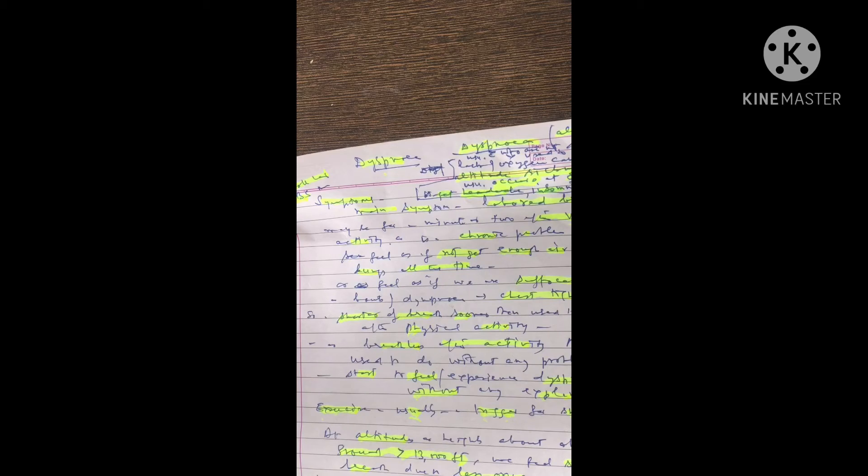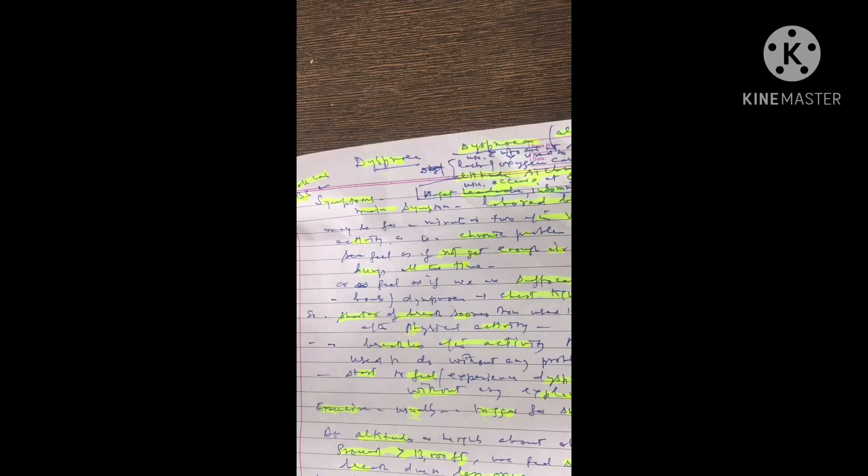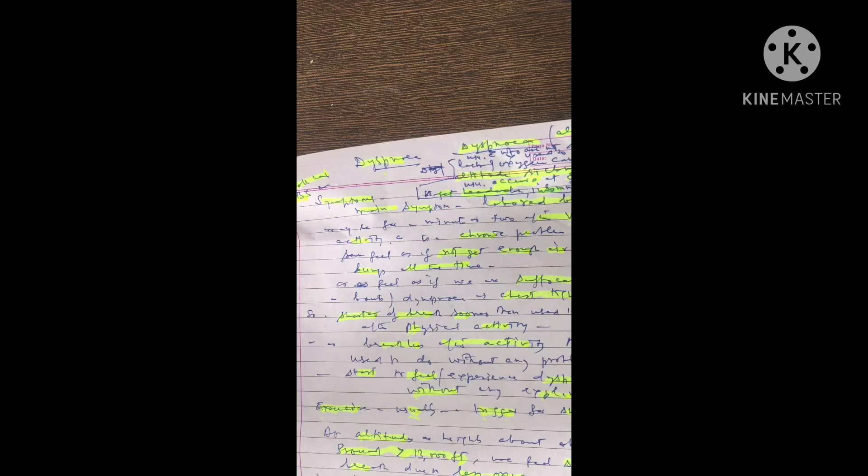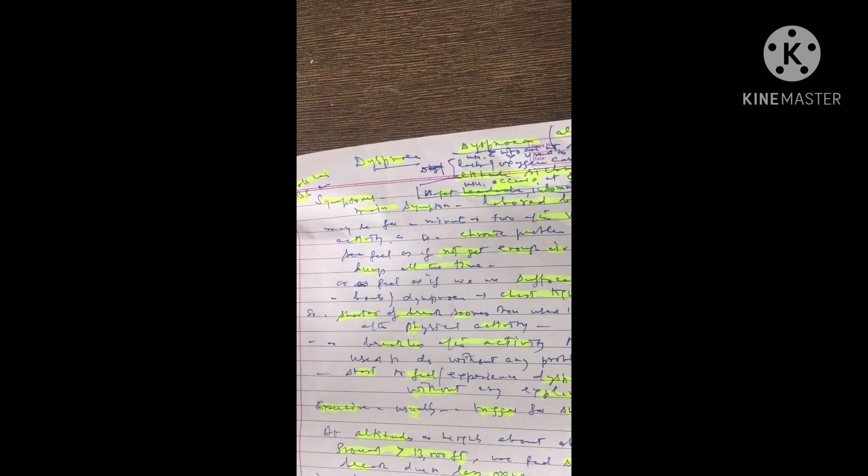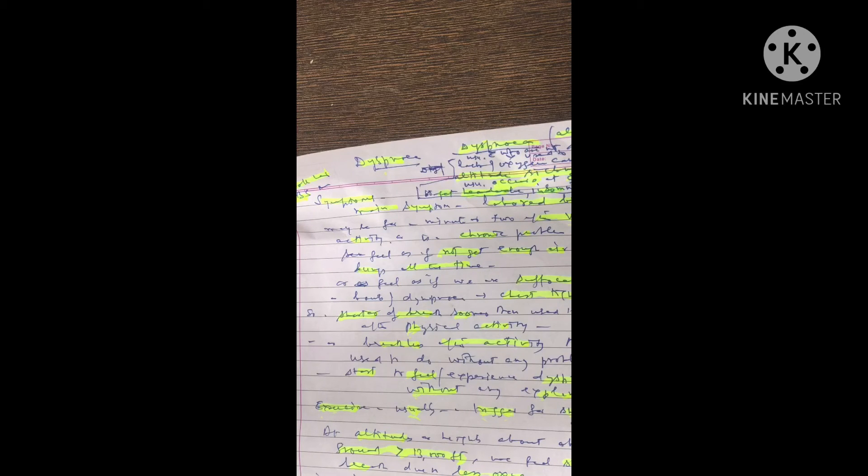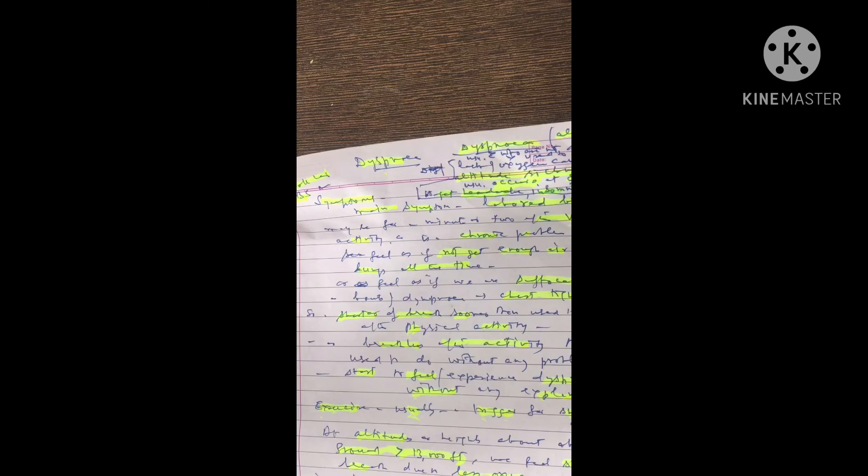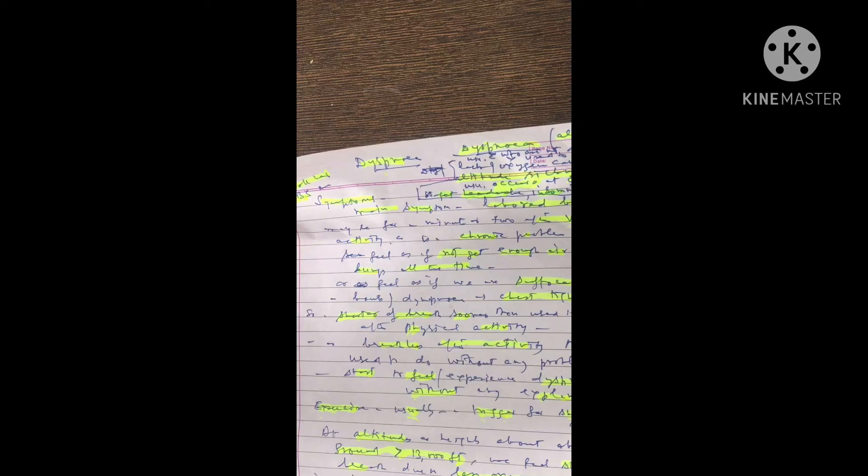Now I will discuss symptoms of dyspnea. The main symptom is labored breathing. It may be for a minute or two after vigorous activity, or it is a chronic problem. One can feel as if he or she is not getting any air into the lungs all the time, or as if we are suffocating, or having bouts of dyspnea. That will cause chest tightness, or we feel shortness of breath sooner than it used to be after physical activity.